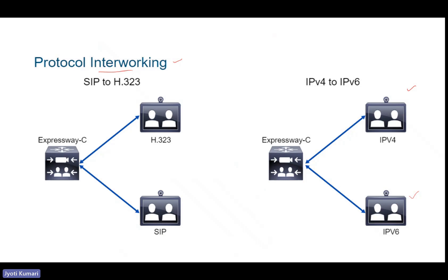Interworking between SIP and H.323 can also be provided to endpoints not only registered to Expressway, but also to those registered to other components like CUCM within the same network. For example, an endpoint registered on CUCM will be a SIP endpoint since CUCM does not support H.323 endpoint registration. A SIP device on CUCM and an H.323 device on Expressway C can still communicate via Expressway C due to its interworking capability. The same interworking feature also applies to organizations with a mixture of IPv4 and IPv6 addresses, enabling Expressway C to interwork calls and perform translations between these protocols during migration.